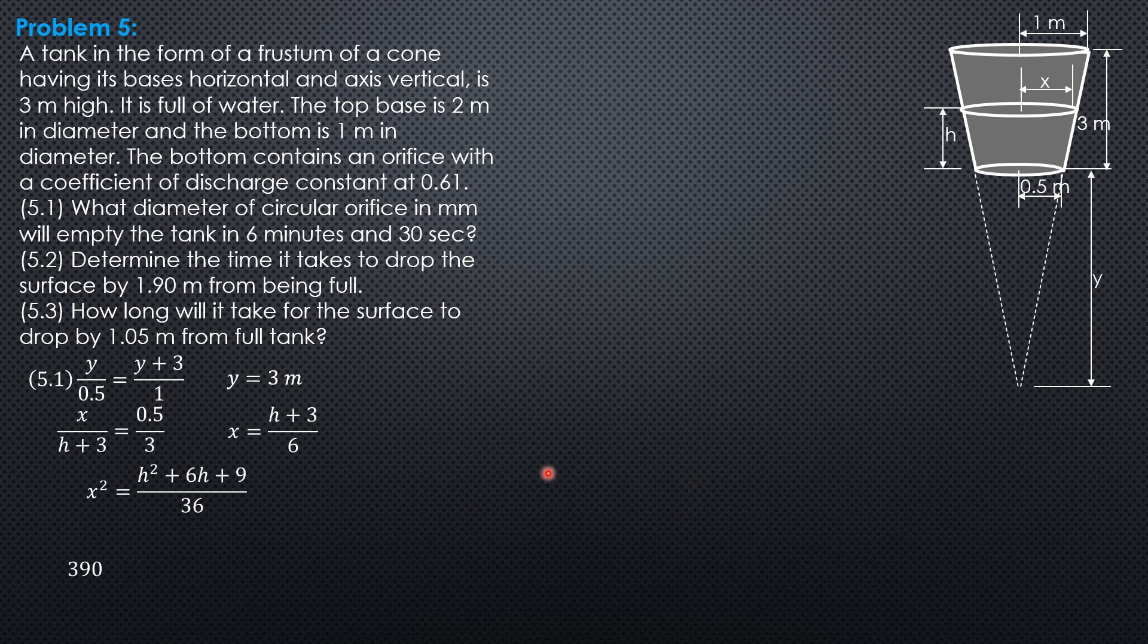And substitute into time equals 390 seconds. Why 390 seconds? Because 6 minutes times 60 seconds per minute is 360 plus 30 seconds. So 390 seconds integral from 0 to 3 of pi X squared. This is X squared dH or area S dH over C a sqrt(2gH).